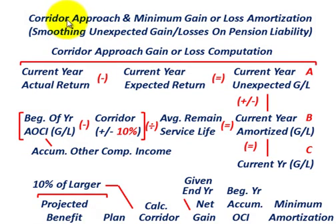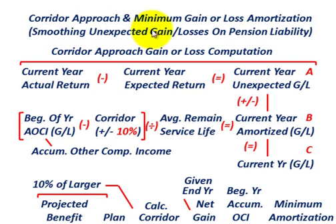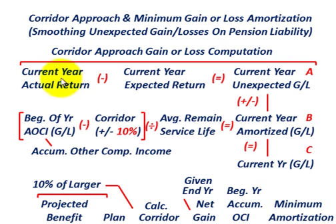What we're going to be going over here is an example where we're going to be using the corridor approach, calculating a minimum gain or loss amortization on a pension liability. This is where we're going to be smoothing any unexpected gains or losses on this pension liability. We start with our current year actual return, subtract our current year expected return, and that gives us our current year unexpected gain or loss — that's part A of our equation.